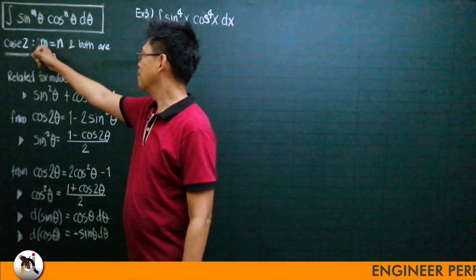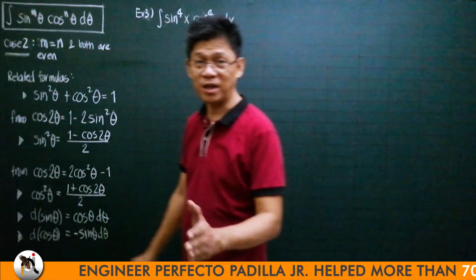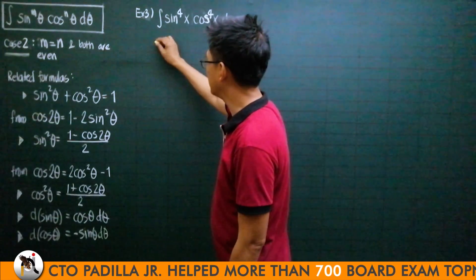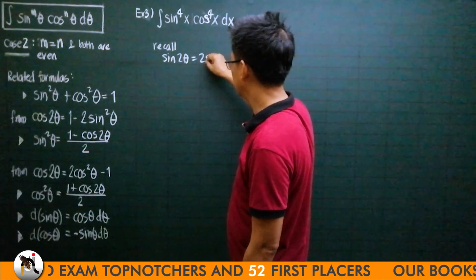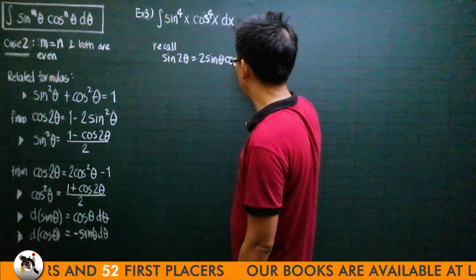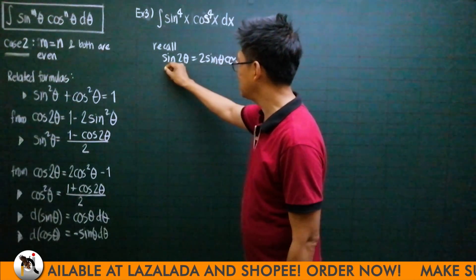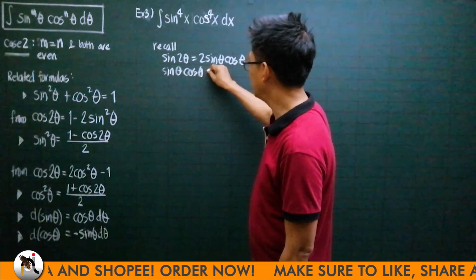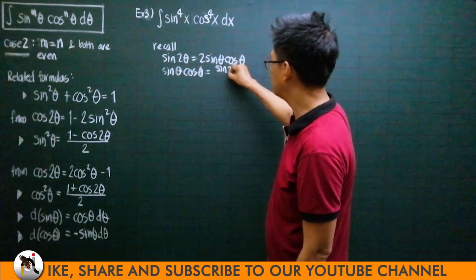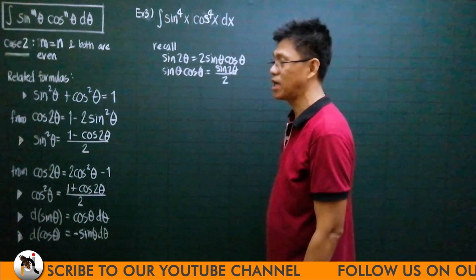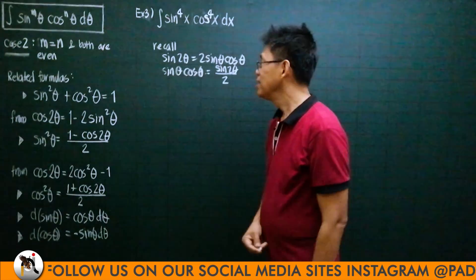What about if both m and n are even and they are equal to each other? We will be needing the identity sine of 2θ = 2·sinθ·cosθ. So the product of sinθ and cosθ is going to be equal to sin(2θ)/2, or one-half of sin(2θ).